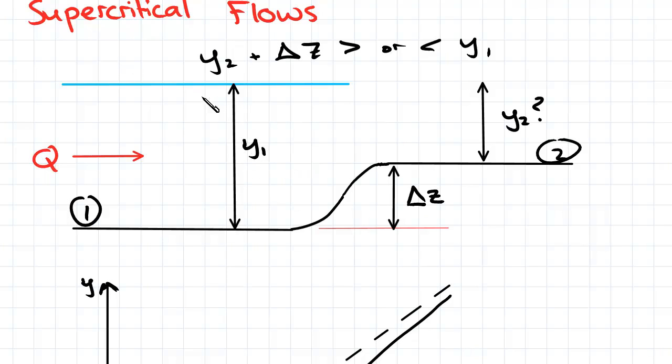So for a supercritical flow with positive delta z, we're going to get a rise in the water surface level, which is as you'd expect.